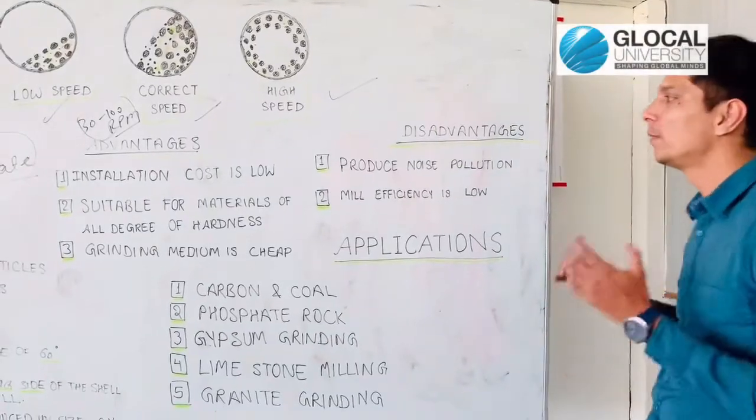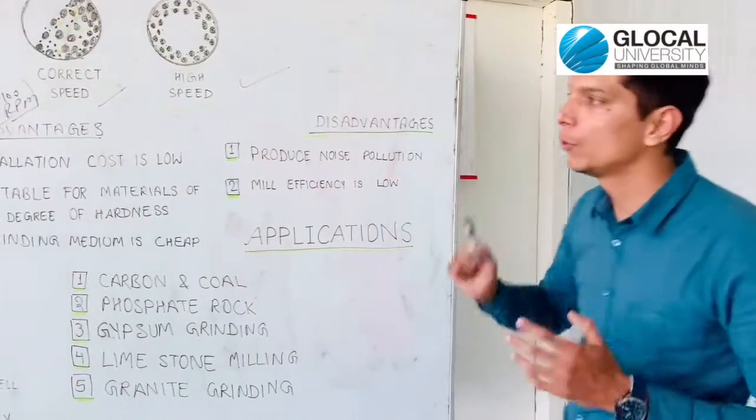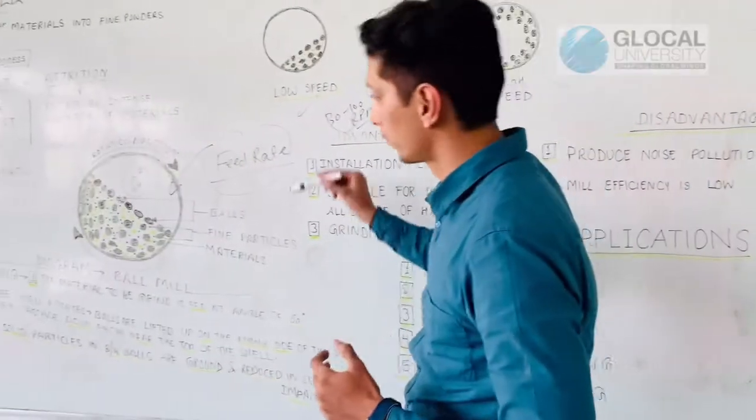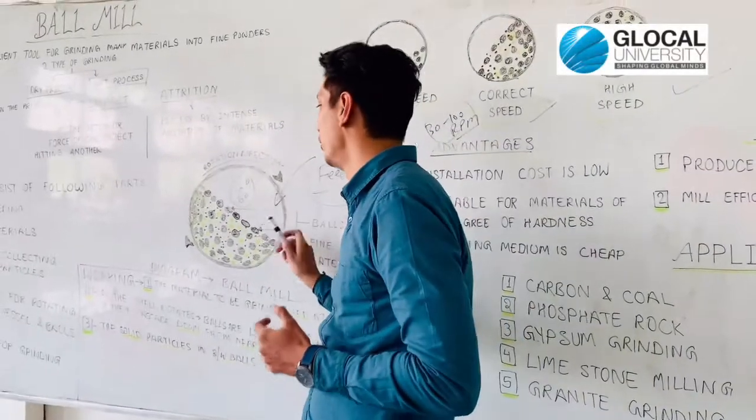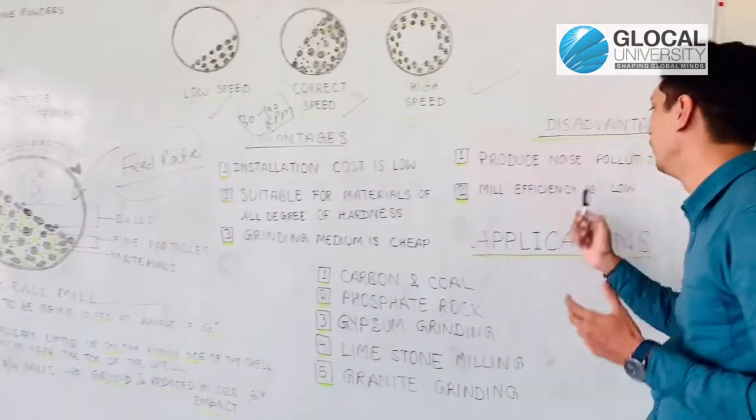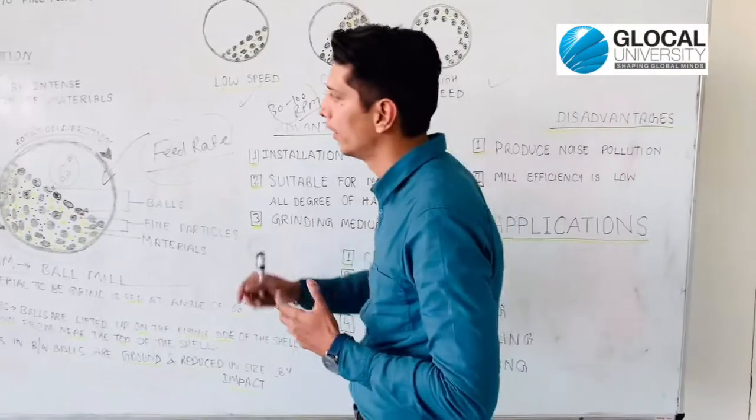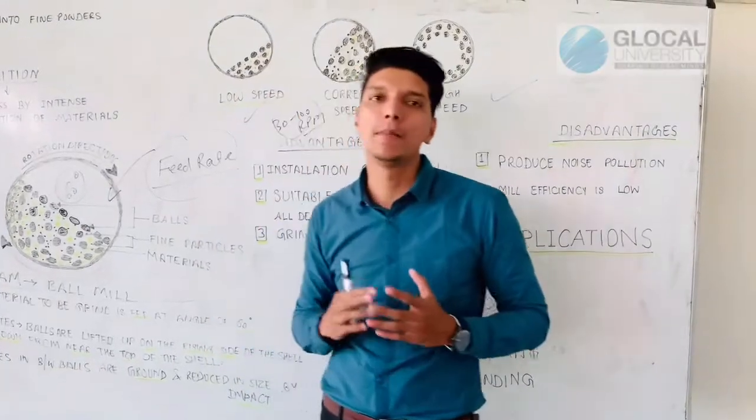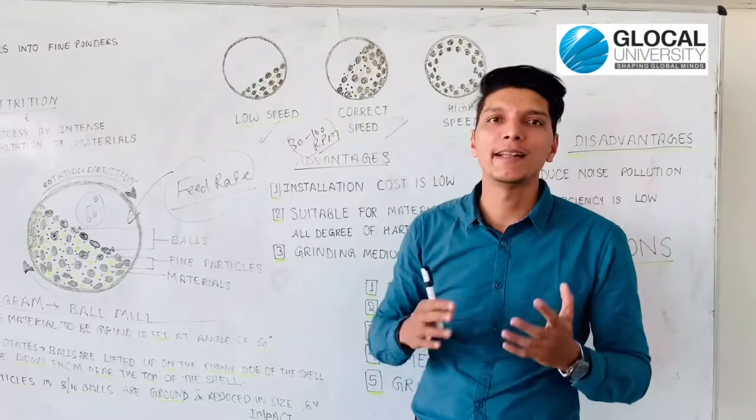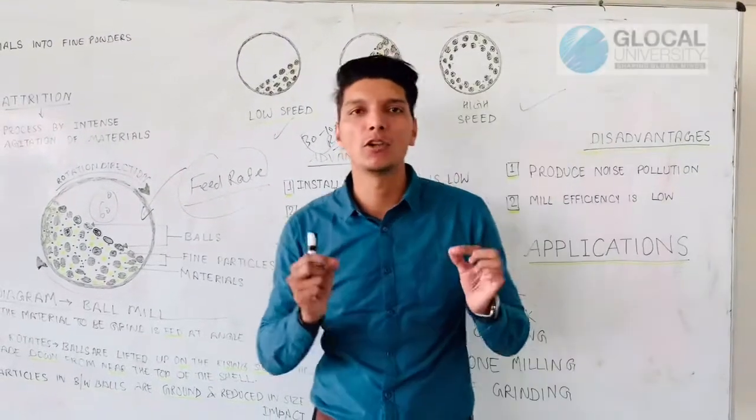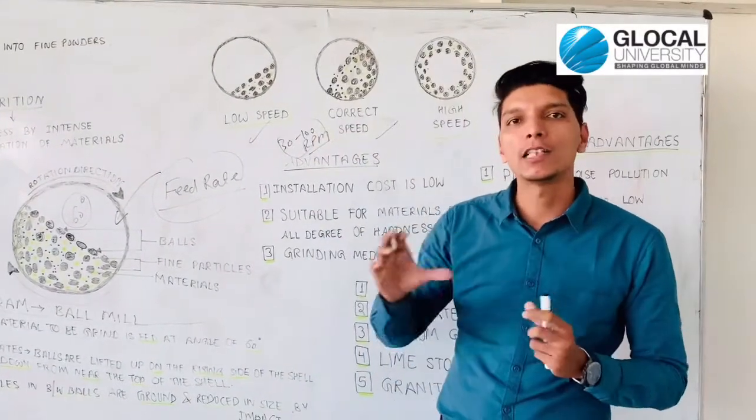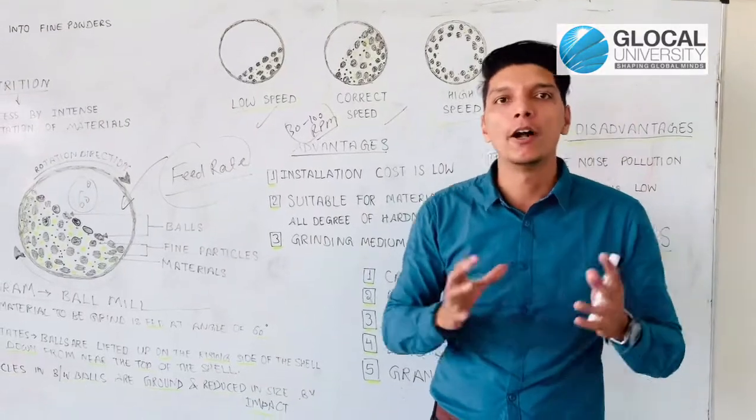Now its disadvantages. It produces noise pollution due to the heaviness of the balls. Next, mill efficiency is low. When this mill rotates about 30 to 100 RPM, its heat capacity and friction increases because many heavy balls are used. Due to friction, it has low efficiency.